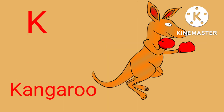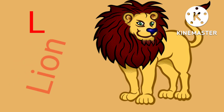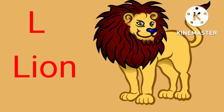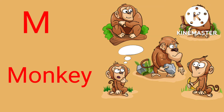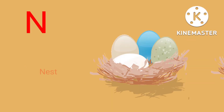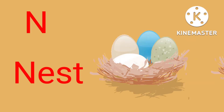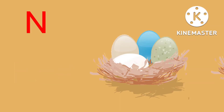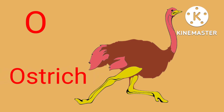K for Kangaroo, L for Lion, M for Monkey, N for Nest, O for Ostrich.